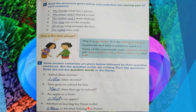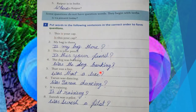So, is it clear class? How to make a question sentence? Next one: 'Raipur is in India.' So the question is: 'Where is Raipur?' Raipur is in India. So, how to make a question is now clear.